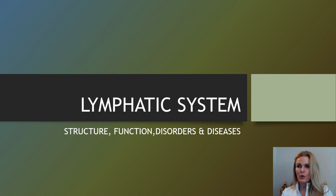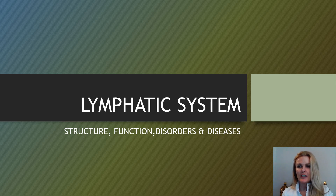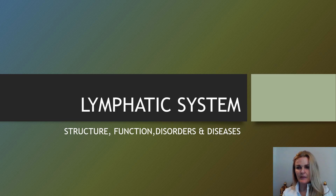The lymphatic system is a network of tissues and organs that help rid the body of toxins, waste and other unwanted materials. The primary function of the lymphatic system is to transport lymph and fluids containing infection-fighting white blood cells throughout the body. The lymphatic system primarily consists of lymphatic vessels, which are similar to veins and the capillaries of the circulatory system. The vessels are connected to lymph nodes where lymph is filtered.